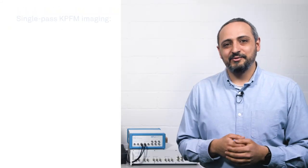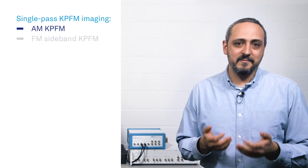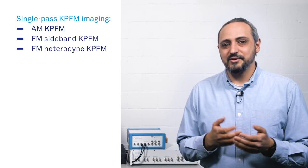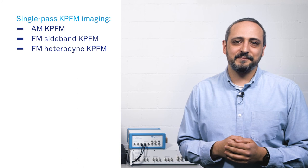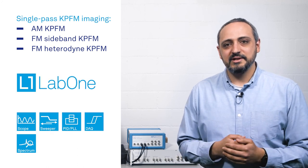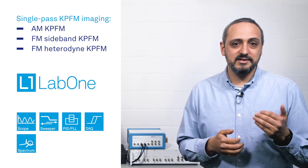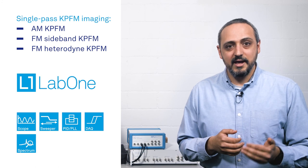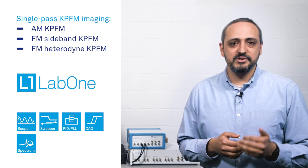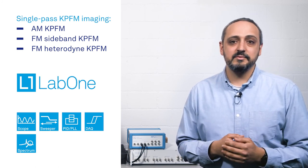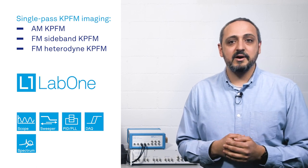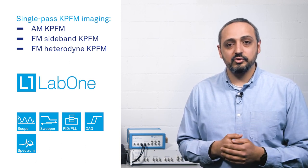There you have it. The workflow to enable various KPFM methods for single-pass imaging using Zurich Instruments Lock-in Amplifier. Thanks to the multiple demodulators for direct simultaneous carrier and sideband detection and multiple feedback controllers integrated into the same instrument, Zurich Instruments Lock-in Amplifiers provide the required control and precision. Interested? Get in touch. We will be happy to help you to find the best configuration for your application. Thank you for watching.